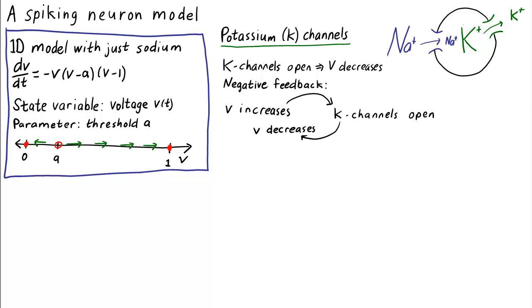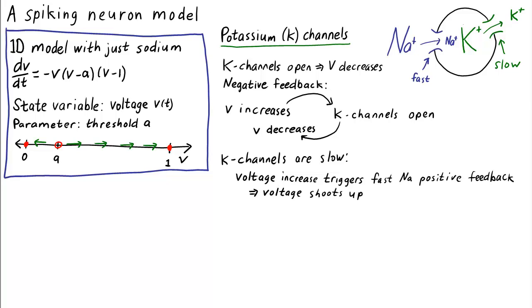There's another way in which potassium channels differ from sodium channels. Sodium channels are fast, opening quickly in response to increased voltage. Potassium channels are a bit more sluggish. When the voltage increases, potassium channels take their time in opening, allowing the fast positive feedback of the sodium channels to cause the voltage to shoot up quickly.